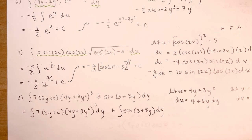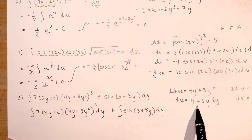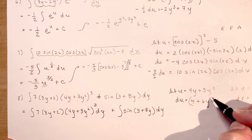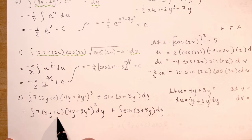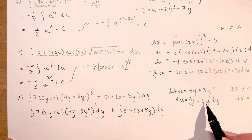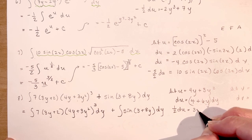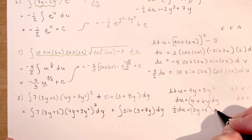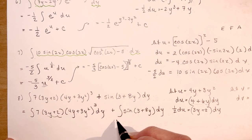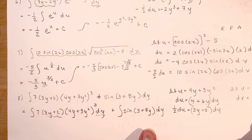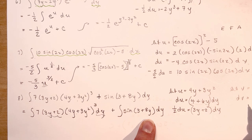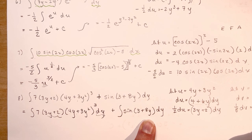With the first substitution, I have 4 plus 6y dy in the derivative, and I have 3y plus 2 in the integrand — and that's going to be half of this one. So 1/2 du equals 3y plus 2 dy. That gets rid of the 3y plus 2 and the dy. For the second part, I have 8 dy, so 1/8 dv equals dy.